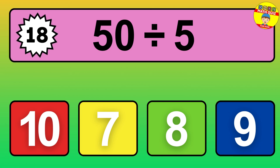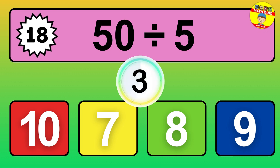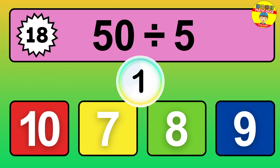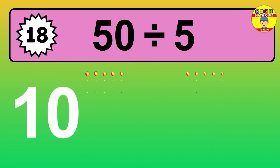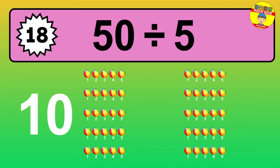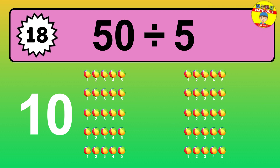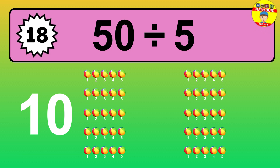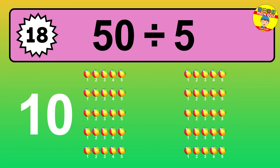What is 50 divided by 5? Picture this: you have 50 objects to divide into groups of 5. How many groups can you make? Let's think about it. Ready to find out? Let's break it down. Imagine you have 50 objects. Can you picture them lined up? Now think about splitting them equally into smaller groups of 5.